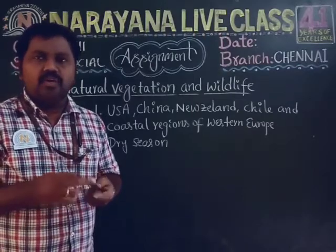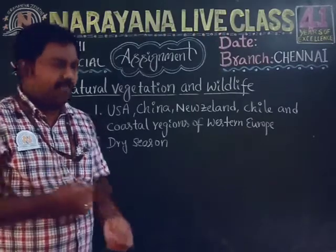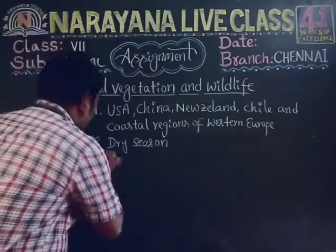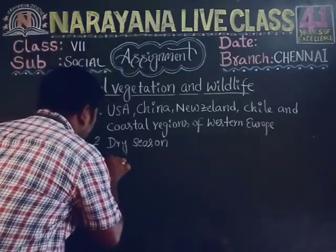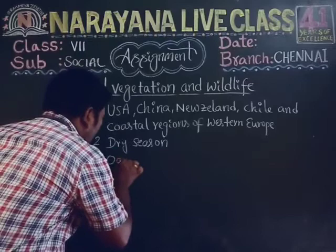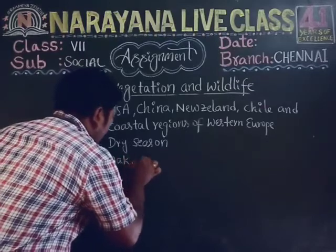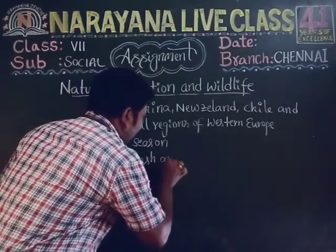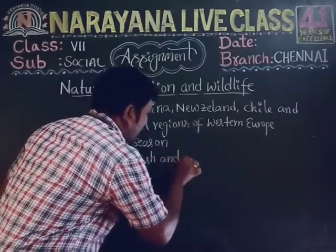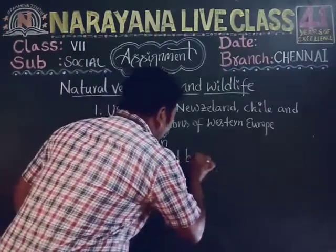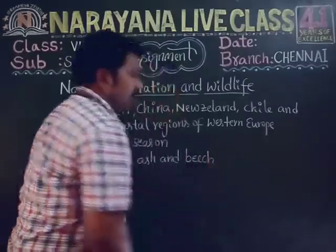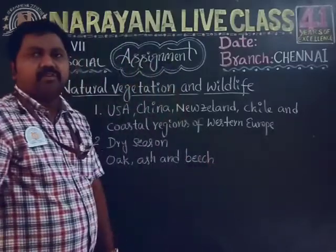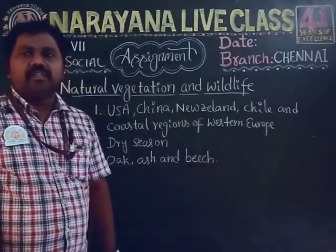The third question: name some common trees found in temperate deciduous forests. The answer is oak, ash, and beech.